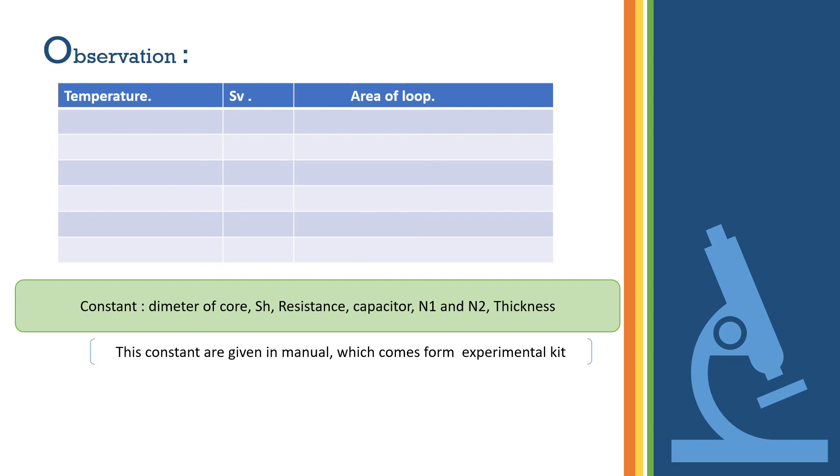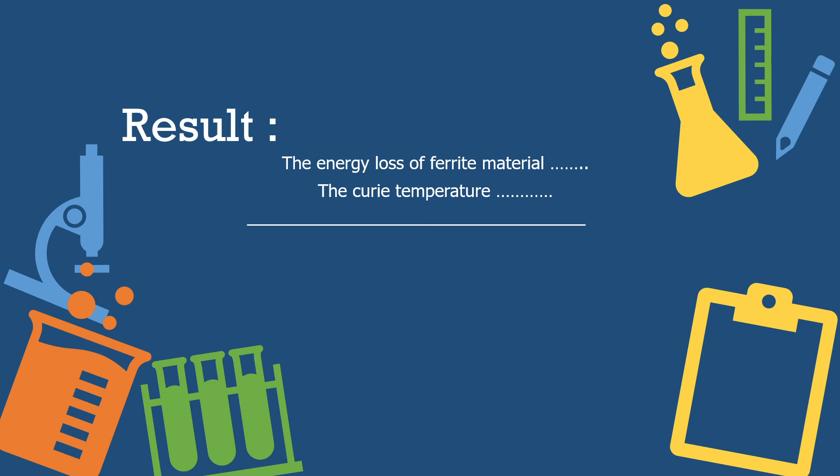When the hysteresis loop is converted into a straight line, we have seen that the ferromagnetic material is totally converted into a paramagnetic material properly.